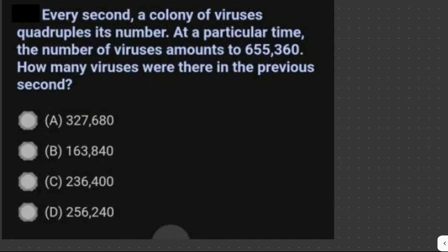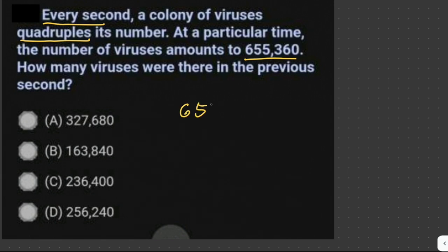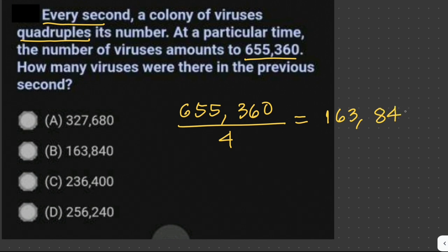Every second, a colony of viruses quadruples its number. At a particular time, the number of viruses is 655,360. How many viruses were there in the previous second? Since the viruses quadruple — meaning four times — each second, we divide 655,360 by 4. That is equal to 163,840 viruses. The answer is letter B.